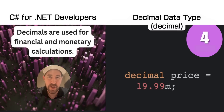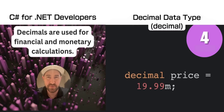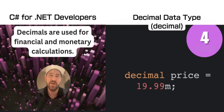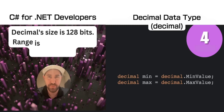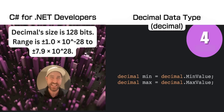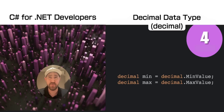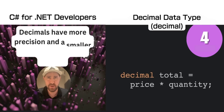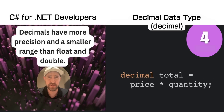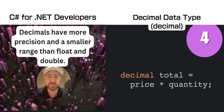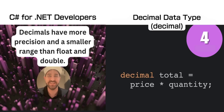The decimal data type is quite similar to float and double, but is normally used for money counting and monetary operations. It uses 128 bits of memory, which is double that of a double, and it is extremely accurate.